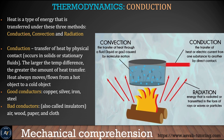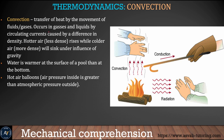Next we learn some thermodynamics — heat transfer. The three main ways heat transfers are conduction, convection, and radiation. Conduction is the transfer of heat by physical contact. Good conductors include copper, silver, iron, and steel. Bad conductors (also called insulators) include air, wood, and paper.